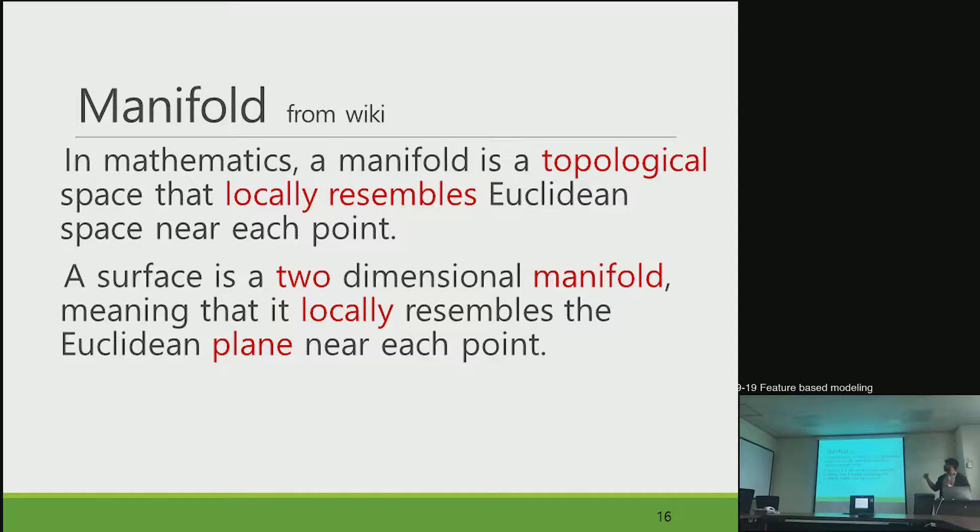It is a topological space that locally resembles a Euclidean space near each point. A surface is a two-dimensional manifold. It locally resembles the Euclidean plane near each point.